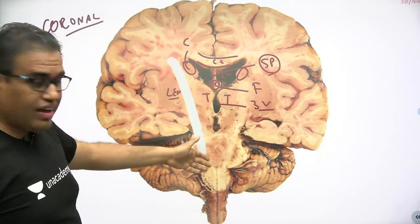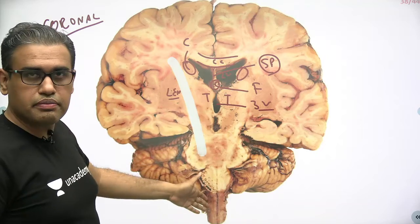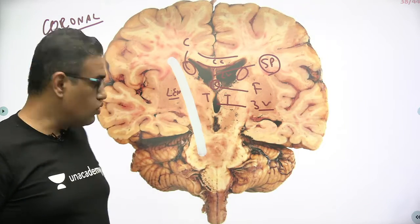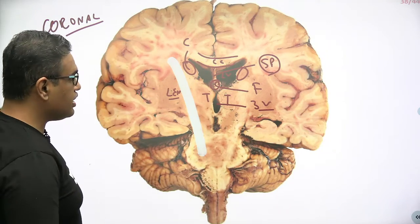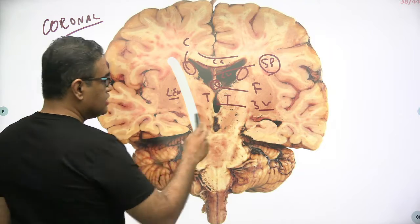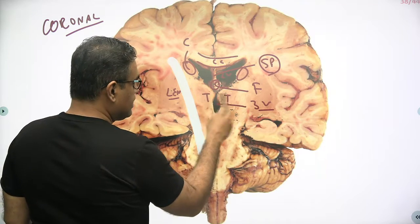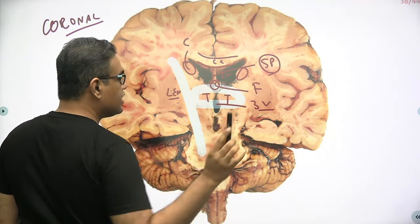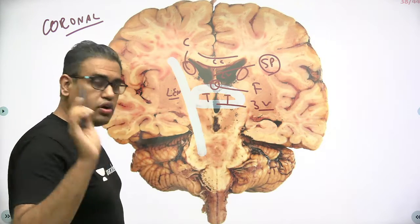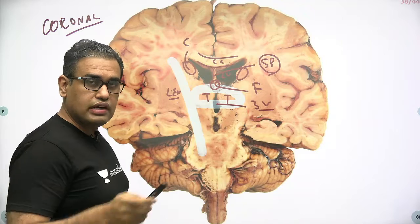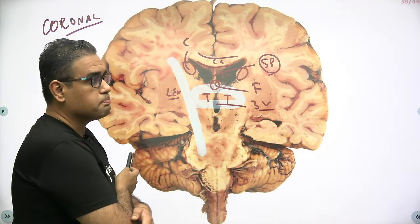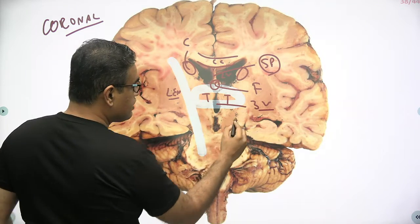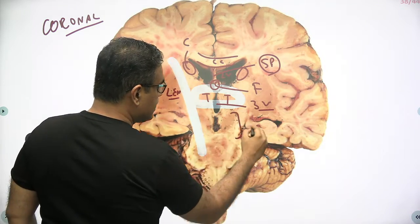The internal capsule fibers are projection fibers — white matter projection fibers — that go from the cortical to subcortical regions, via the brain stem, and even down to the spinal cord. Below the diencephalon is the area of the midbrain, as we saw in the base of the brain image.